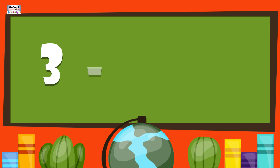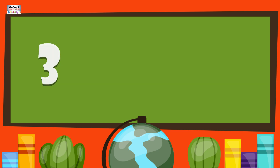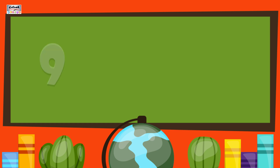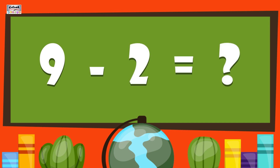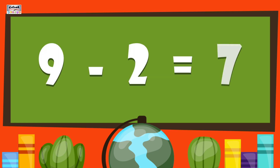3 minus what gives us 3? 3 minus 0 gives us 3. 9 minus 2 gives us what? 9 minus 2 gives us 7.